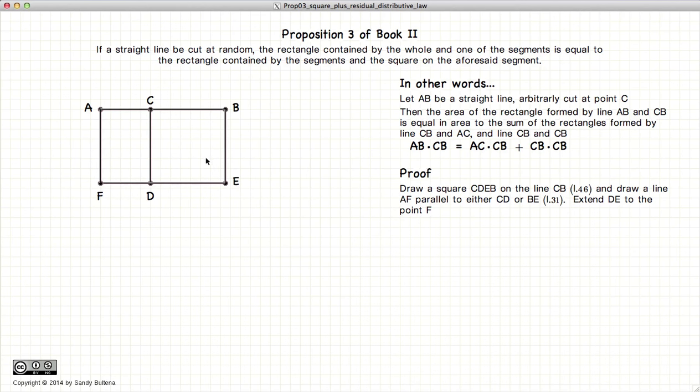So these are all rectangles, which means that the line segment AF is equal to the line segment CD. Since this is a square, CD is equal to CB.